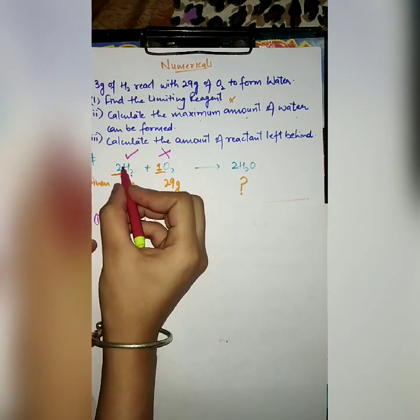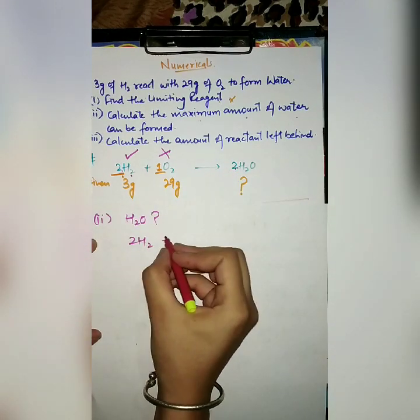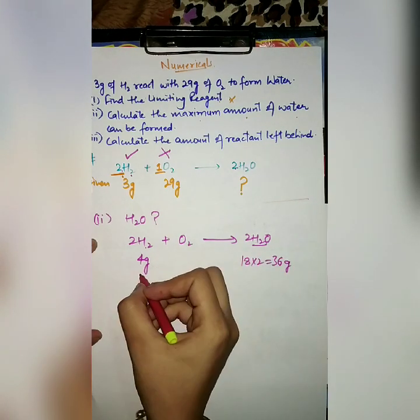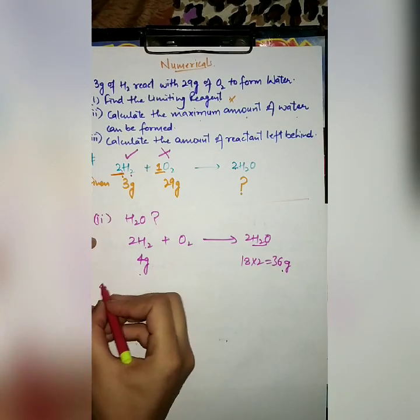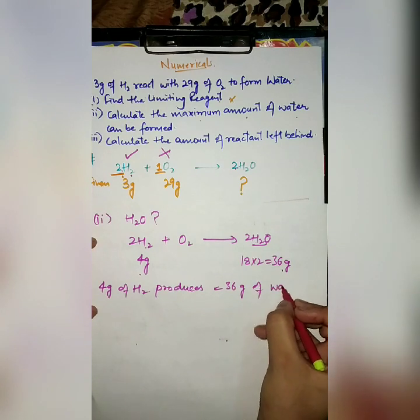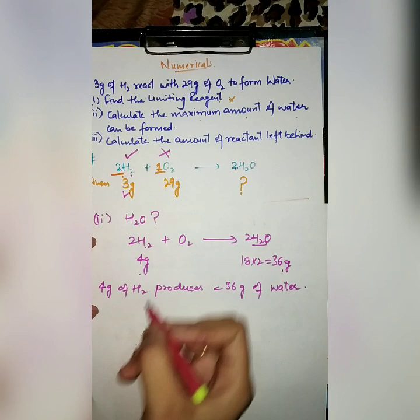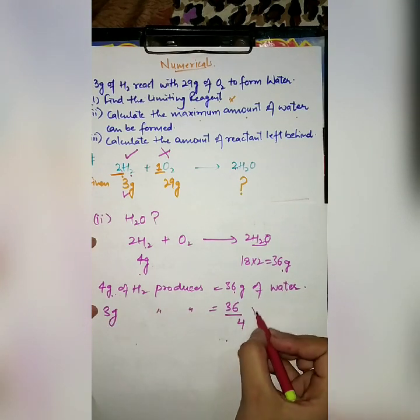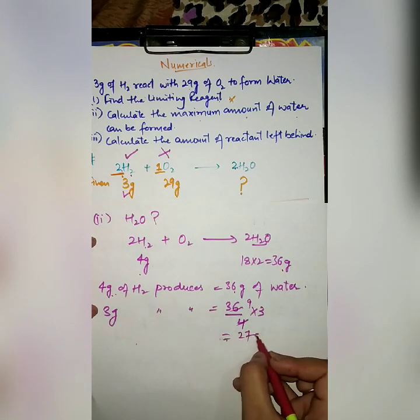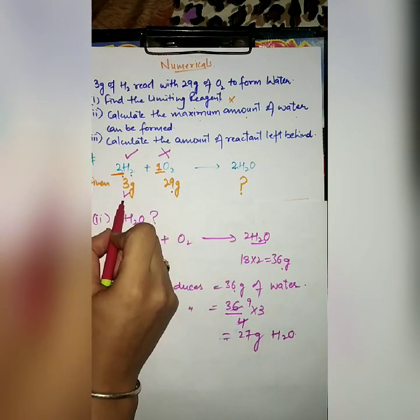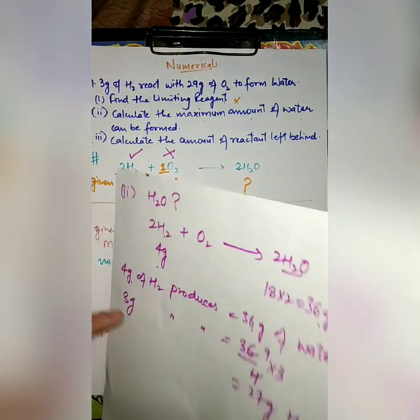We only have 3 grams of hydrogen. So if 4 grams produces 36 grams of water, then 3 grams produces (36/4) × 3 = 27 grams of water. So the maximum amount of water that can be formed is 27 grams.